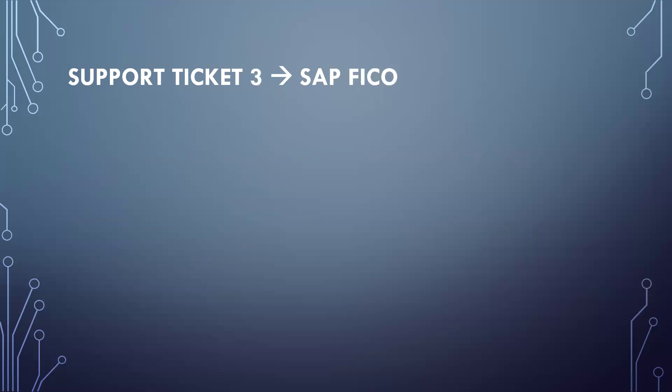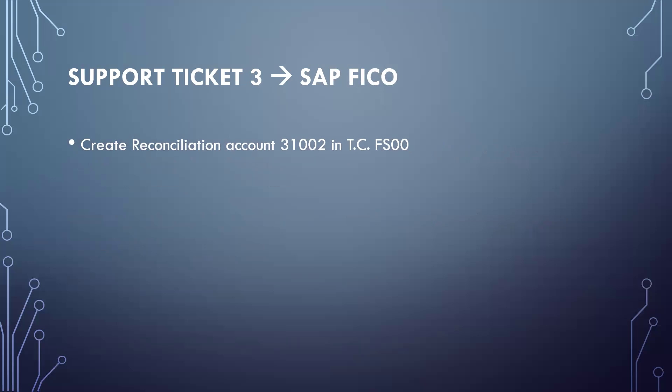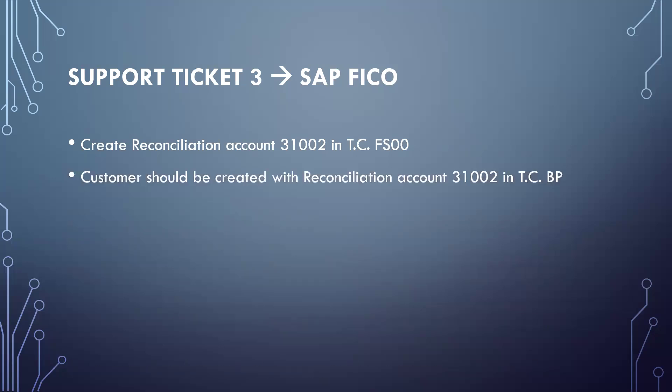The next ticket is SAP FICO. We have to create a reconciliation account in FS0 — FS0 is the transaction code. The new support ticket requires reconciliation account 310002 to be created. Once the reconciliation account is created in FS0, the customer can be created with that reconciliation account (310002) assigned to it in the BP transaction.